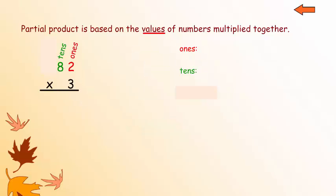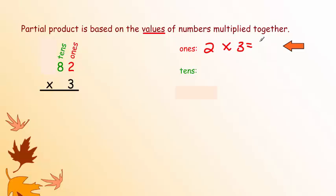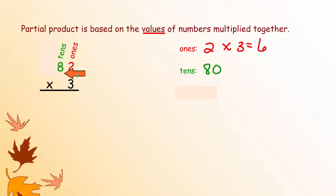Let's look at another problem: 82 times 3. The 2 is in the ones place, so go over to the right where we see the ones column, and you're going to write 2 times 3. We start with the ones place. We write 2 times 3 equals 6. Next we're going to move over to the tens place. The 8 is in the tens place — if you have 8 tens, the value is 80. Now we're going to do 8 in the tens place times 3.